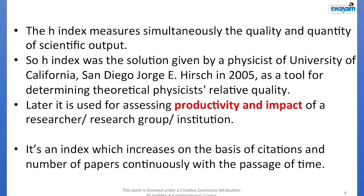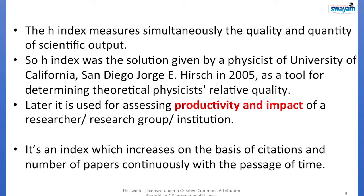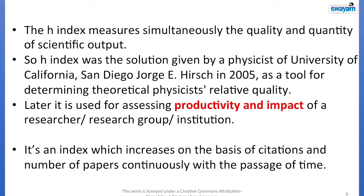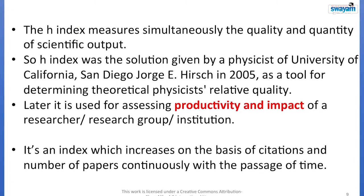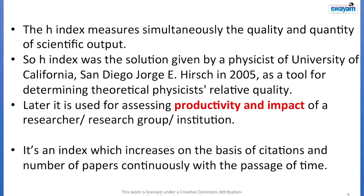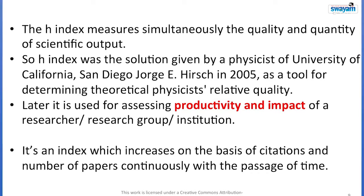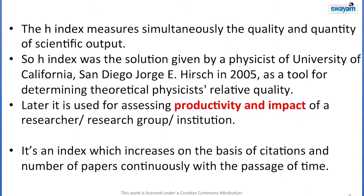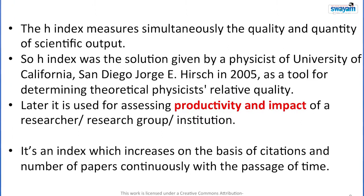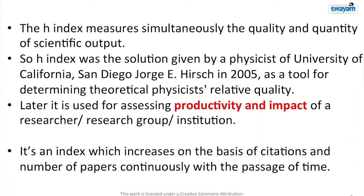H-index was proposed by physicist George E. Hirsch of the University of California, San Diego, in 2005 as a tool for determining the relative quality of theoretical physicists. Later, it came to be used for assessing productivity and impact of a researcher, research group, or institution, irrespective of subject. It is an index which only increases — please remember, H-index only increases while the impact factor can increase or decrease.